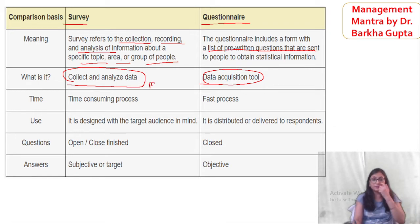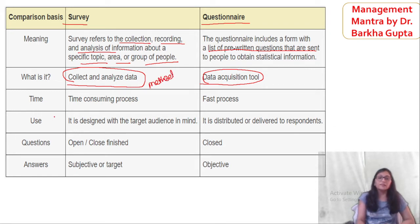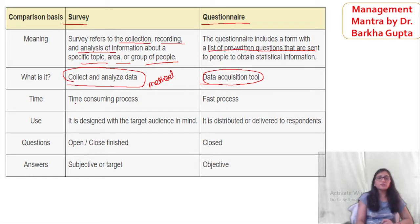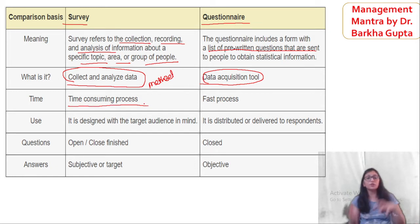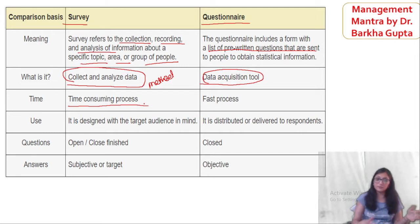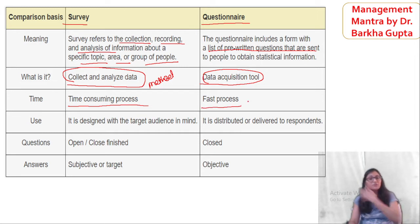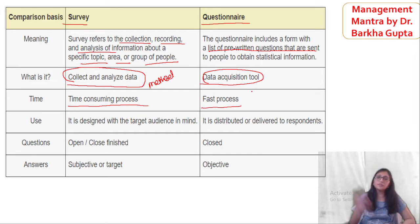We can also say that the survey is a method. The survey is a time-consuming process because you collect data, record it, and also analyze it. But the questionnaire is a fast process — it works directly.